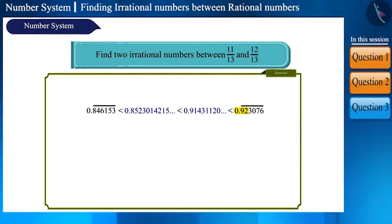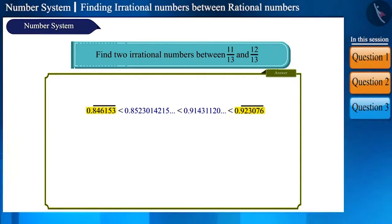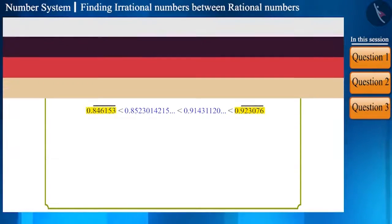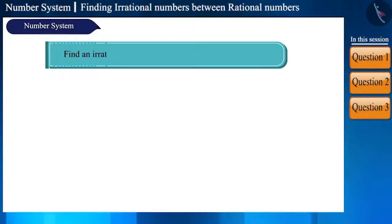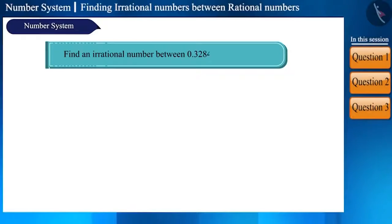This second number is smaller than 0.92, meaning it is located between the two given numbers. Now let's take an interval that is very short — a small interval.